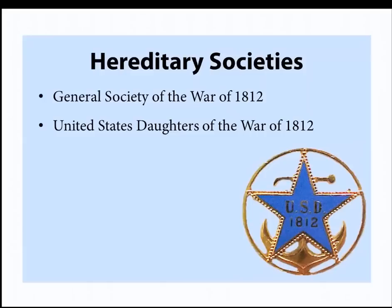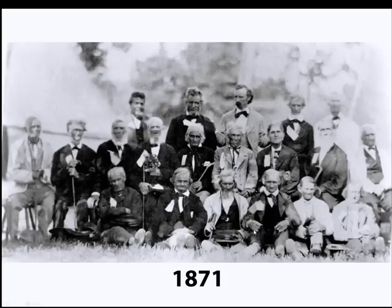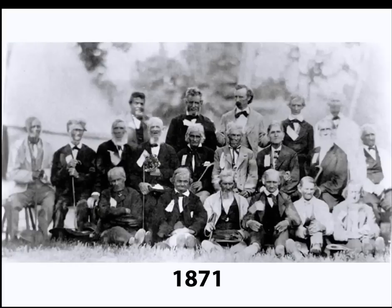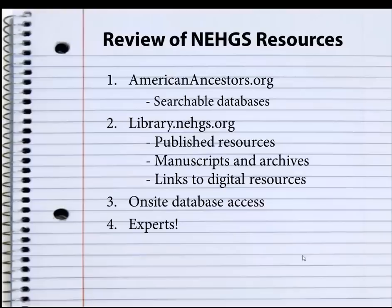Step three: seek out hereditary societies. Two come to mind: the General Society of the War of 1812, and the United States Daughters of the War of 1812 for female descendants. As an interesting snippet: here is an 1871 photograph of an assemblage of War of 1812 veterans. The gentleman with the dark bow tie looks a bit younger — that's George Armstrong Custer, who would be known for the Battle of Little Bighorn in 1876. He had served in the Civil War — an interesting historical parallel of two eras.